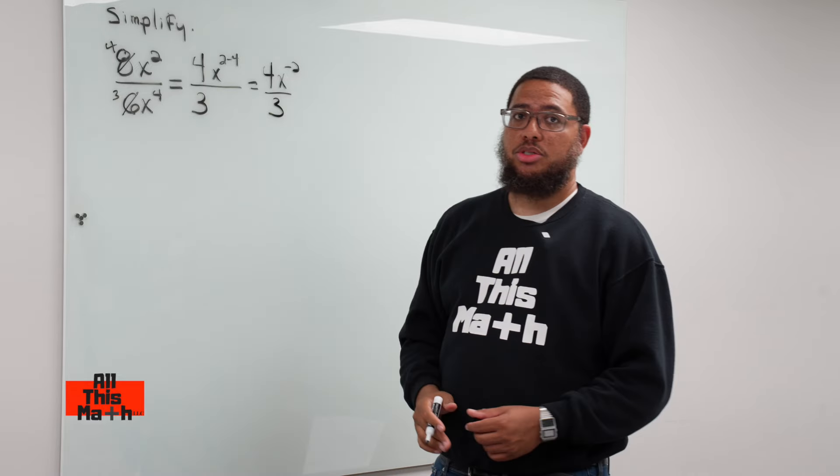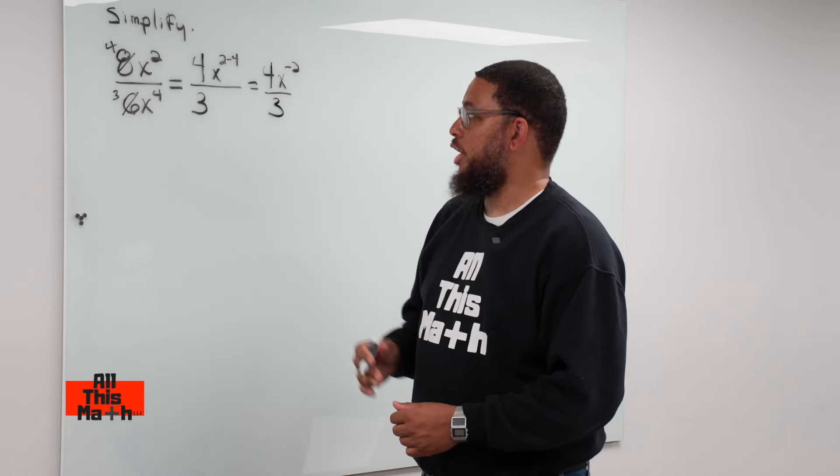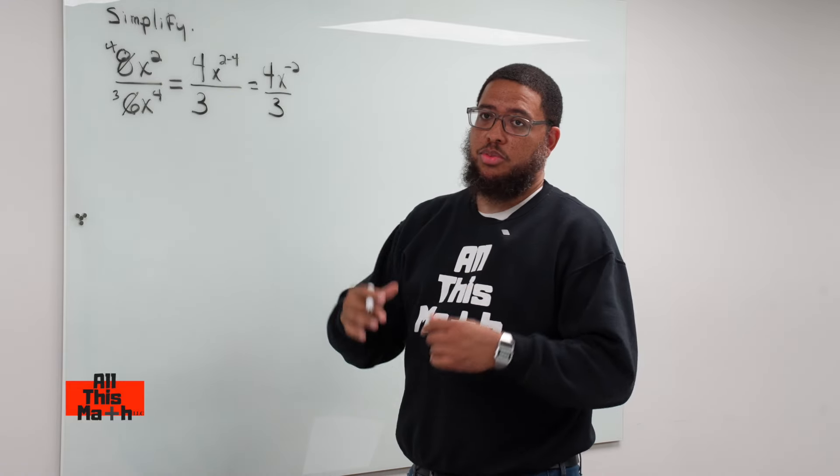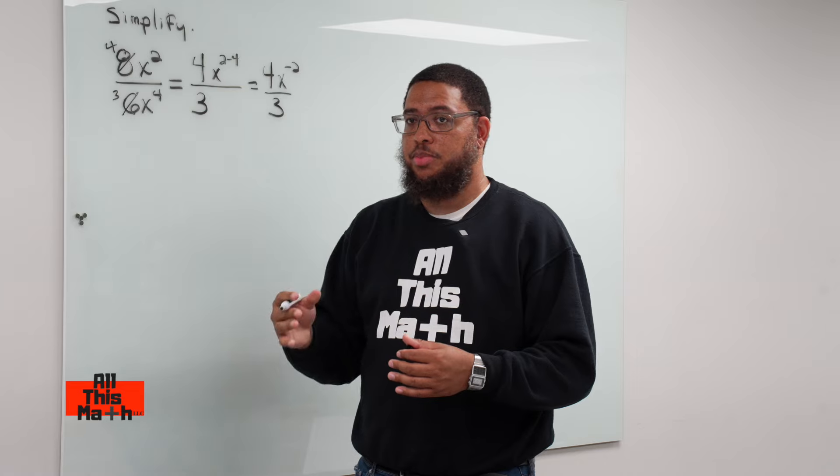Now, this brings us to another exponent property, the negative exponent property. So the negative exponent property says this, because when we have a final answer, typically we don't want to have a final answer that has a negative exponent.